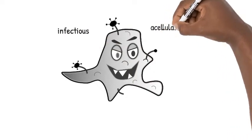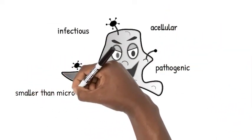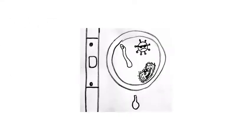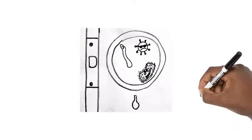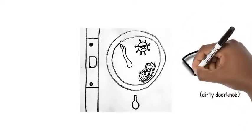Having cells is the number one rule for something to be considered a living thing. A lot of times we hear about viruses living on surfaces, but that is a little misleading because technically viruses are not alive.